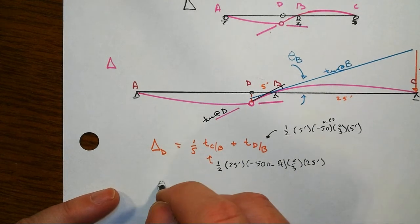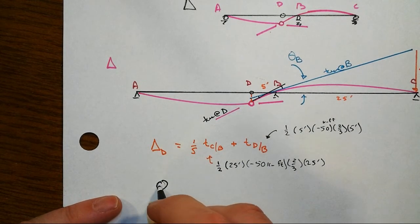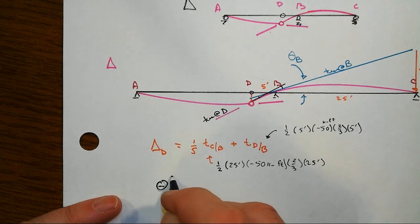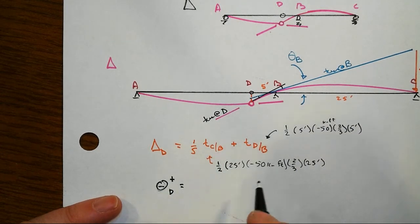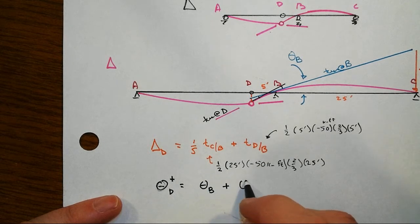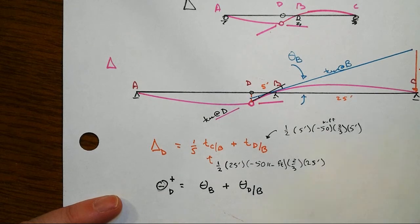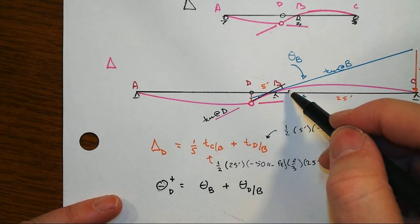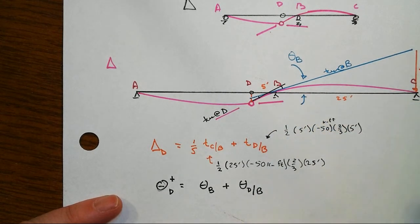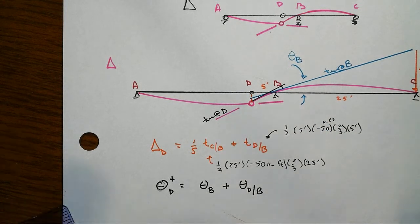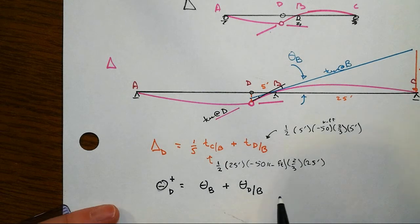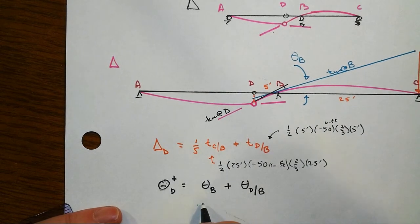That slope at D to the right of the hinge is going to be equal to the slope at B plus theta D with respect to B. That's that whole big angle that's in here, and we can do that without regard to sign. It's a very straightforward case, so we don't have to be so focused on the sign here. Theta B, of course, was equal to the opposite over adjacent.